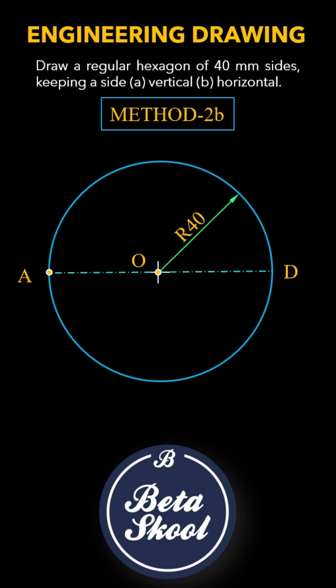Now, with point A as the center and the same radius of 40mm, draw arcs that intersect the circle at two points. Mark the intersection points as B and F respectively.